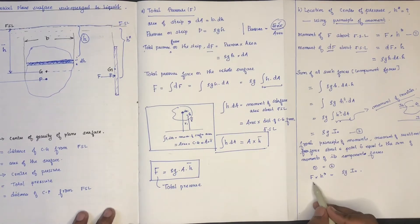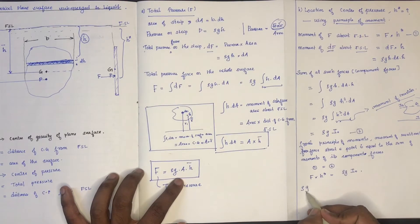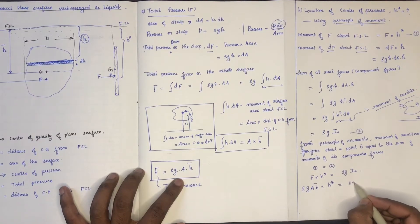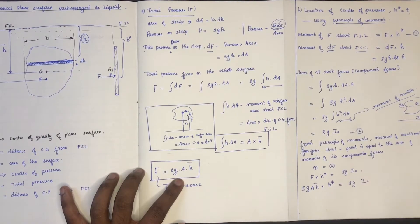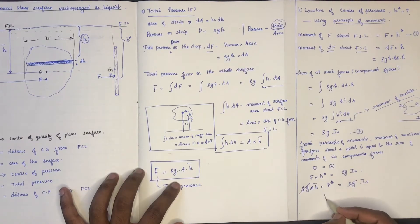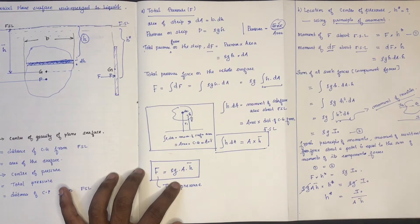We will substitute for F: rho g A h-bar. So we have rho g A h-bar on the left side and rho g I₀ on the right side. From this we will get H-star is equal to rho g I₀ divided by rho g A h-bar.